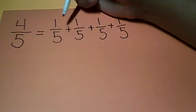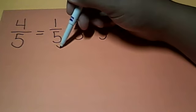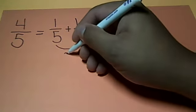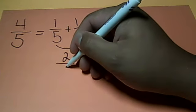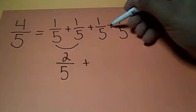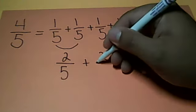Now, what is equivalent to this? This is the unit fractions, but you can also say, if I take these two right here and add those two fractions, I can have 2 fifths plus, you can take these two and make that 2 fifths.